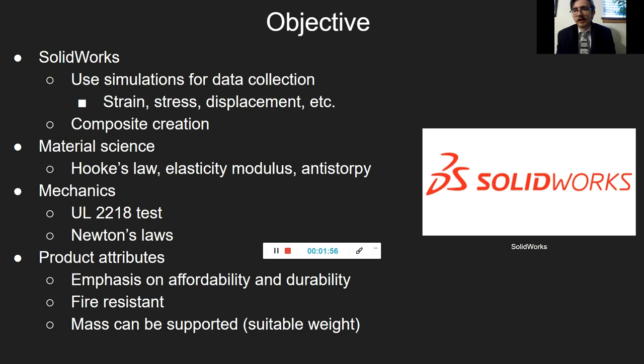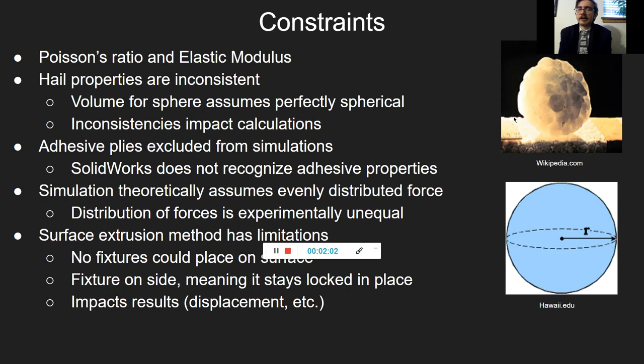Some of the constraints: there were variables I couldn't find, including Poisson's ratio and the elastic modulus for specific materials such as fiberglass and asphalt. We should also note that hail properties are pretty inconsistent — for example, the size of hailstones is inconsistent, meaning the volume won't be consistent throughout, and that really does impact our calculations.